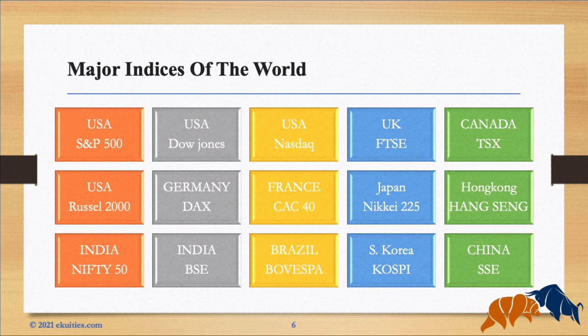We go to Germany — they have the DAX, a blue chip stock market index consisting of the 30 major German companies trading on the Frankfurt Stock Exchange, also a market capitalization weighted index. Then we move to France — they have the CAC 40, a benchmark French stock market index. It presents a market capitalization weighted measure of the 40 most significant stocks among the 10 largest market caps on the Euronext Paris.